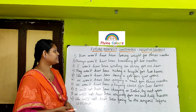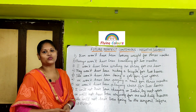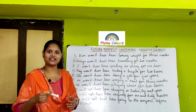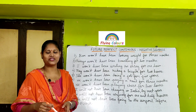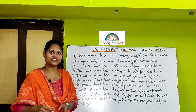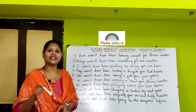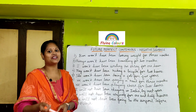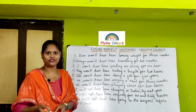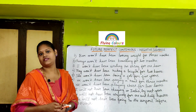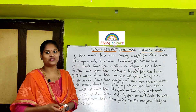Ramya won't have been traveling for two months. Ramya started traveling in the past and she is continuing her traveling in the present. But this traveling action will not continue in the future for two months — two months is the duration.